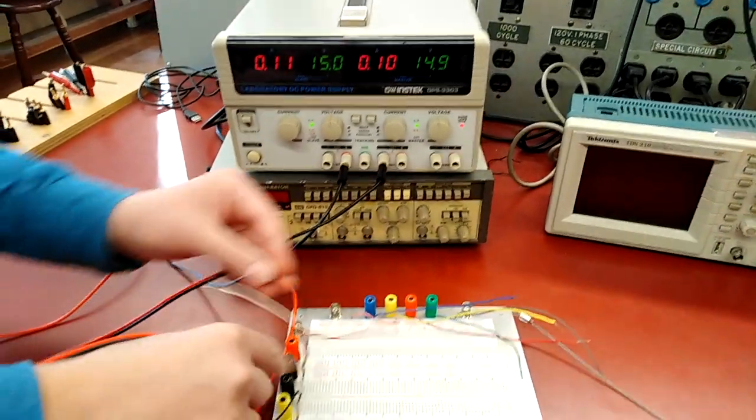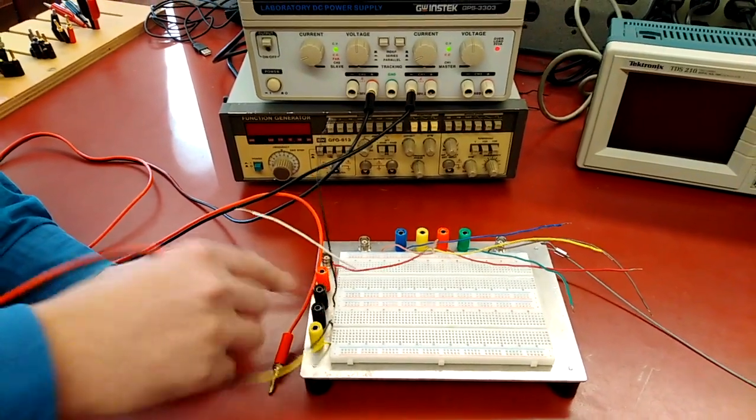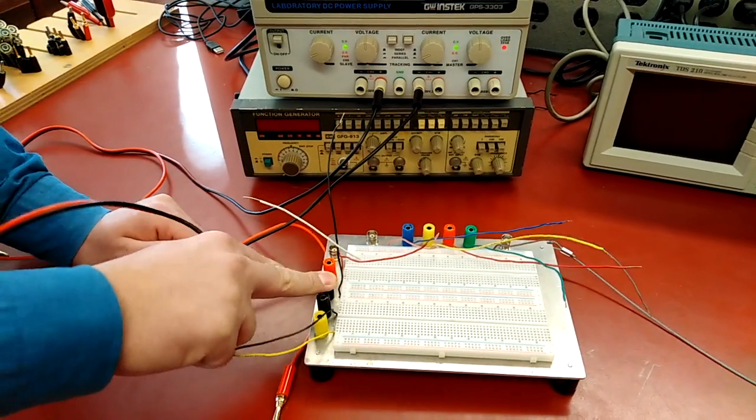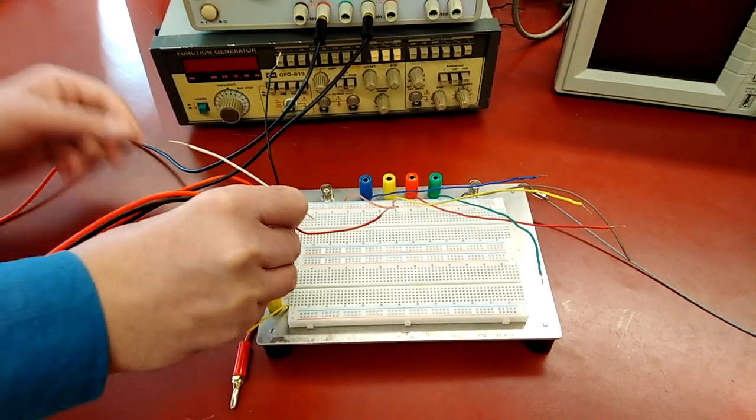The black sockets on the board are wired to the body of the board, so you cannot use them for anything but ground. These are only for ground. It's important to keep that in mind.